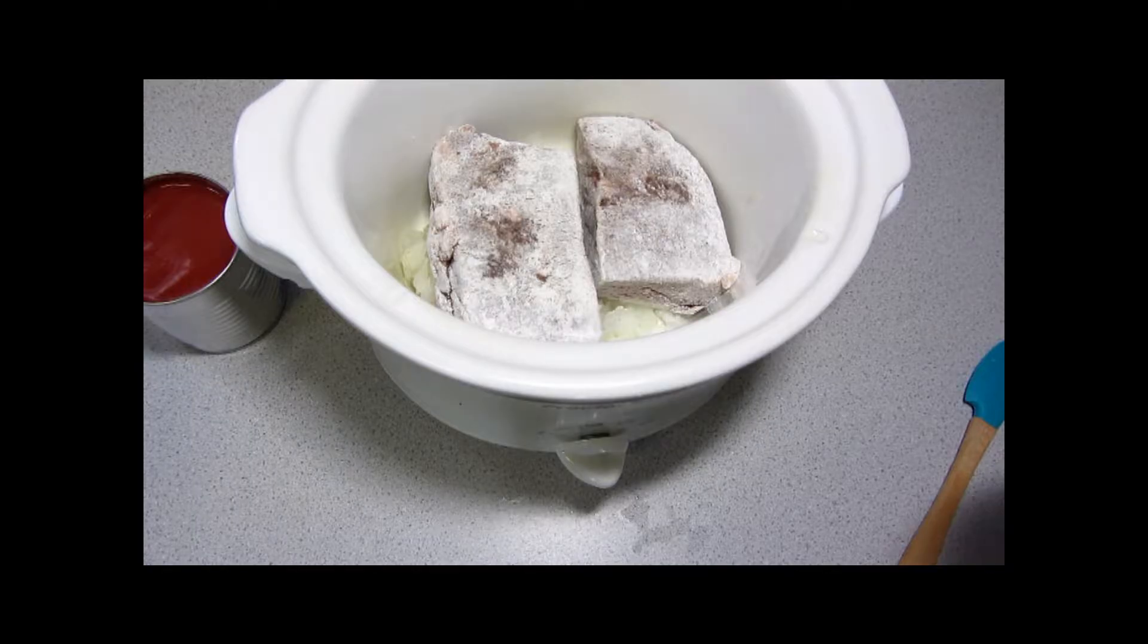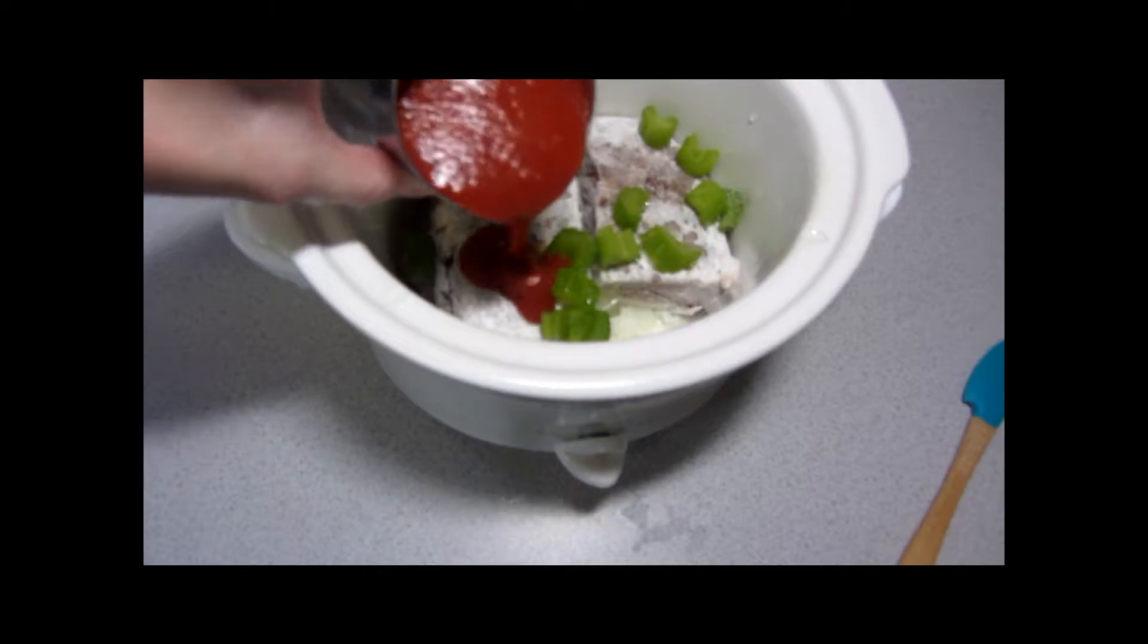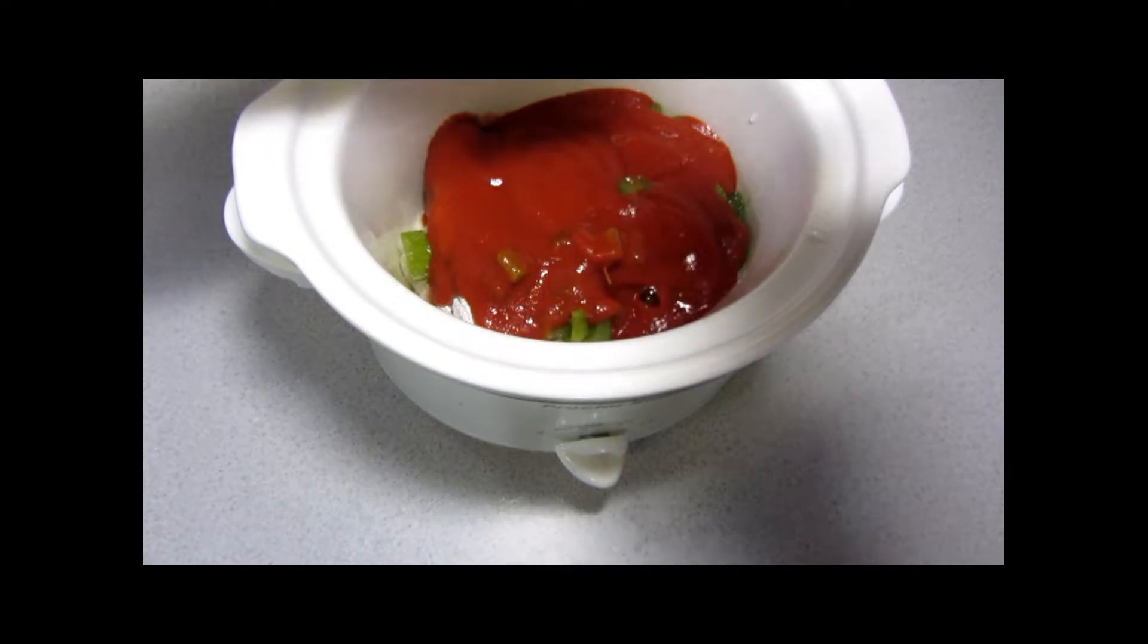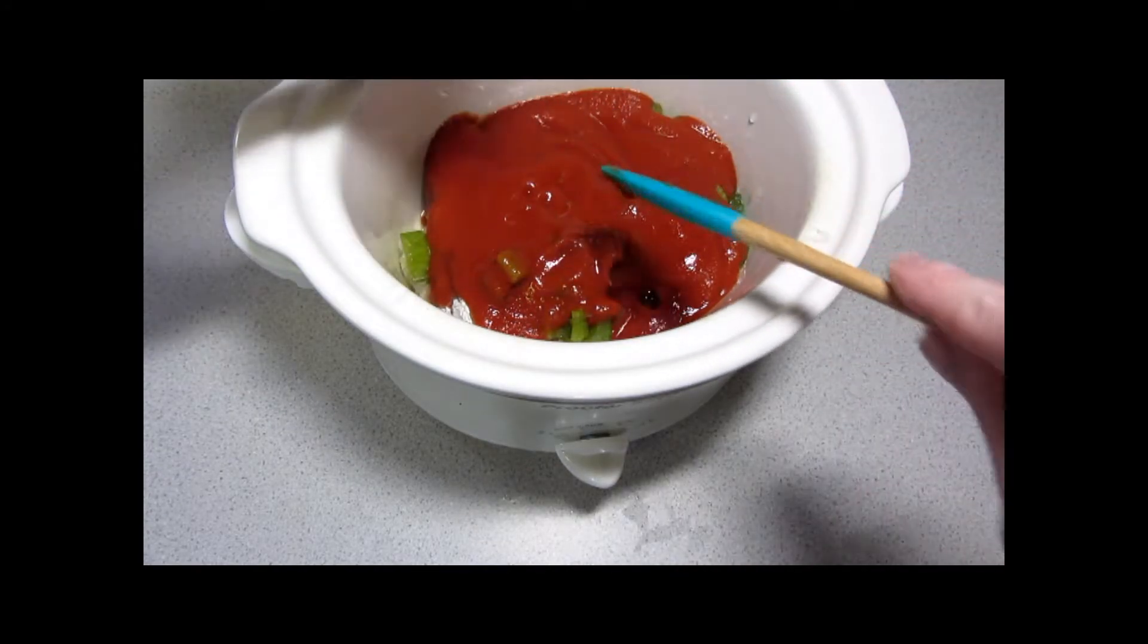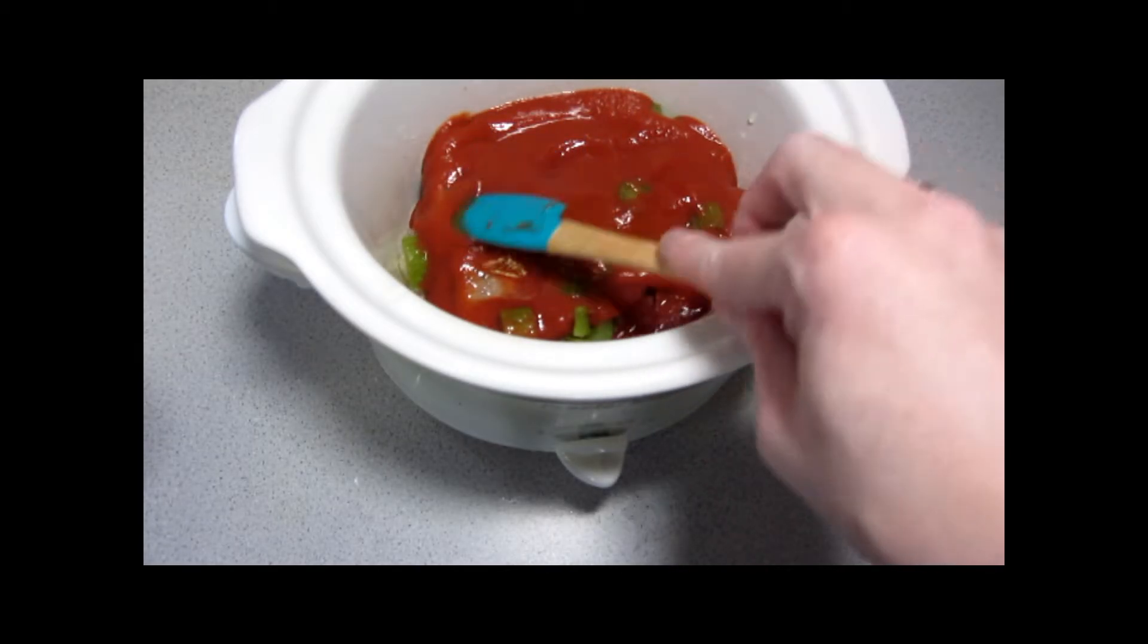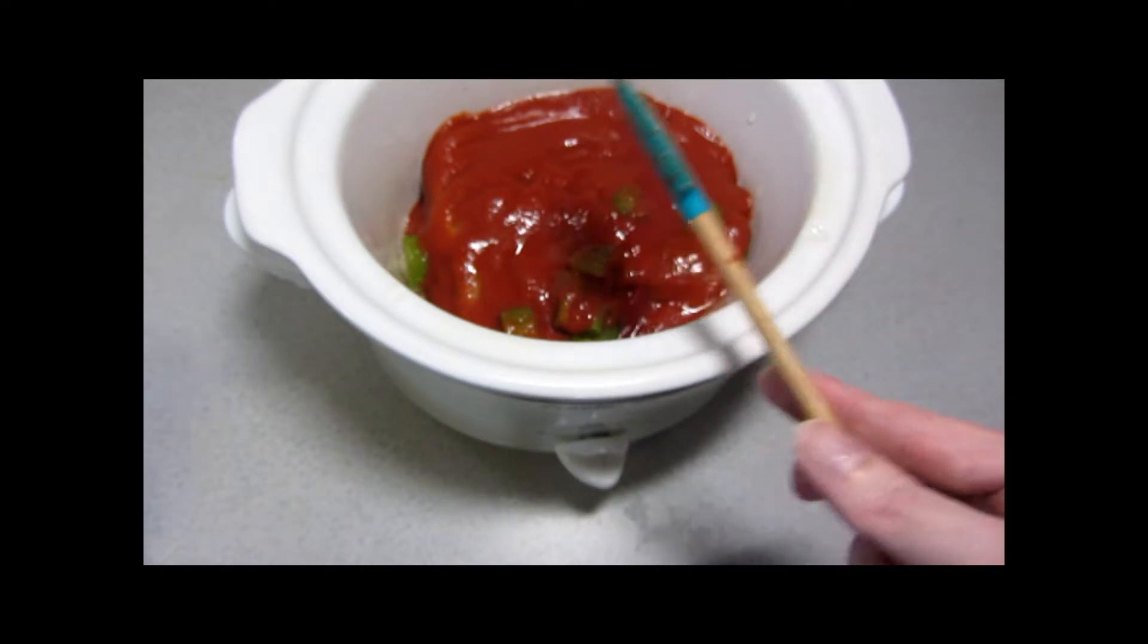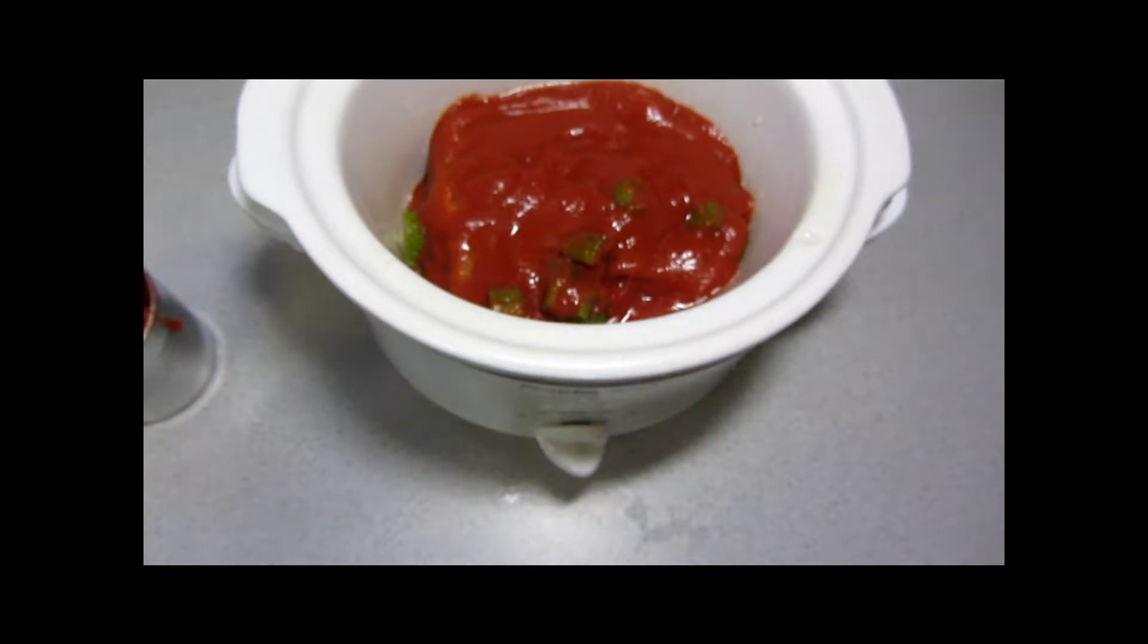I'm very simply going to add our celery and the entire eight-ounce can of tomato sauce. Then I like to just make sure that meat is well covered, and we're going to put the cover on.